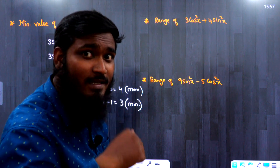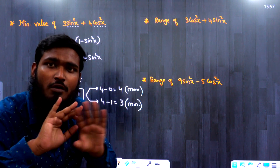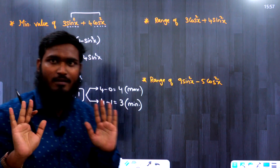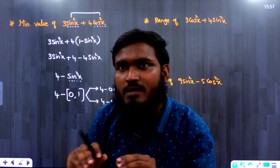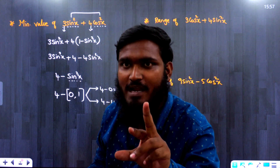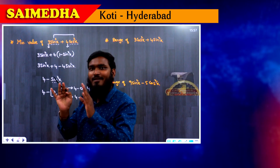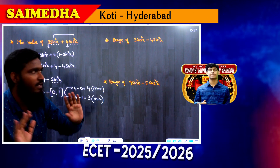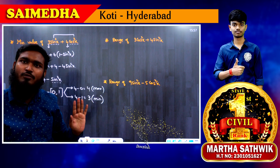Now let me tell you a shortcut — a time-saving result. No need to solve any steps at all. Whenever you have a sin²x and cos²x combination in the question, two numbers will be mentioned. In this case, three and four. The smaller number becomes the minimum value and the larger number becomes the maximum value. That's it.